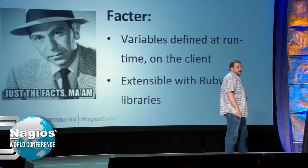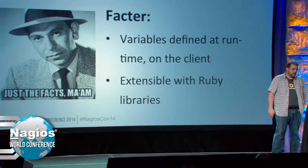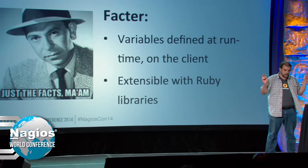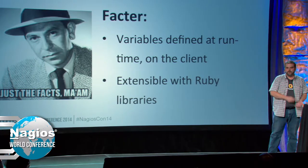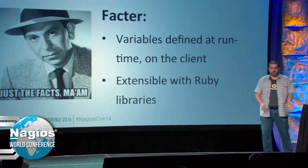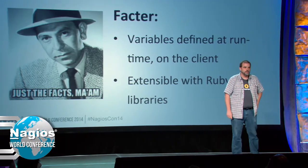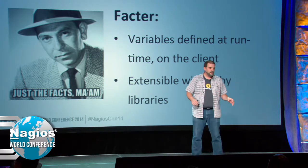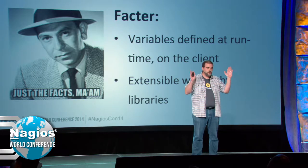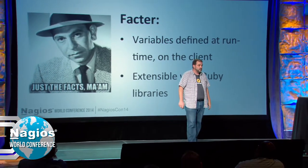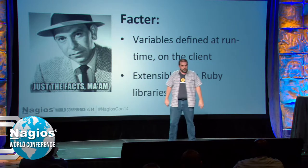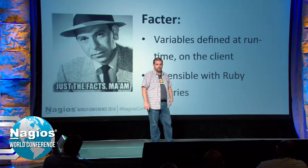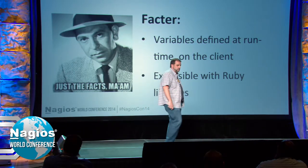Facter is a program that comes with Puppet and runs on each client. It uses Ruby libraries to gather facts from the system — things like your fully qualified domain name, IP addresses, whether you're a virtual machine, what your hypervisor technology is. It makes those available to your Puppet policy as global scope variables. You can extend it with custom Ruby libraries if you want to discover some custom fact — just write a little Ruby script that outputs the right value.